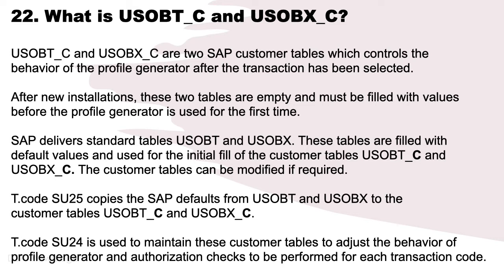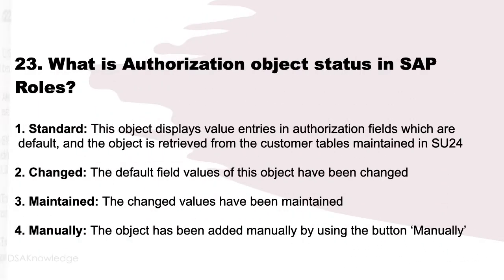Transaction SU24 is used to maintain these customer tables to adjust the behavior of the profile generator and authorization checks for each transaction code. What is authorization object status in SAP roles? Number 1: Standard — displays default field entries retrieved from customer tables maintained in SU24. Number 2: Changed — the default field values have been changed. Number 3: Maintained — the changed values have been maintained. Number 4: Manually — the object has been added manually using the manual button.